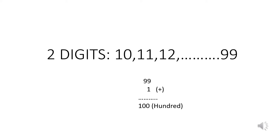Two-digit numbers are from 10 to 99. The smallest two-digit number is 10 and the greatest two-digit number is 99. When we add 1 to the greatest two-digit number 99, we get 100.